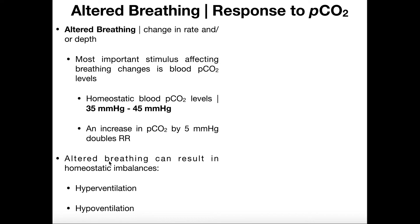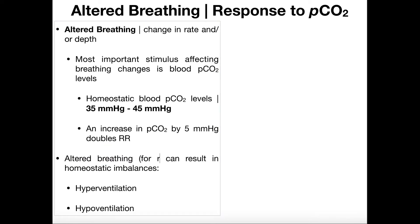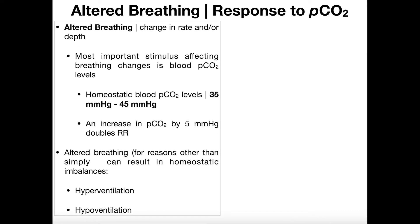On the next slide we'll go into the mechanism of altered breathing. To clarify: altered breathing for reasons other than simply a change in pCO2 can actually result in things like hyperventilation and hypoventilation. These are abnormal conditions and don't normally happen. When you go out and exercise and start breathing harder, that's not hyperventilation. Hyperventilation is more like what happens during an anxiety or panic attack. By definition, altered breathing is simply when the rate and depth of breathing changes in response to changes in pCO2 levels.